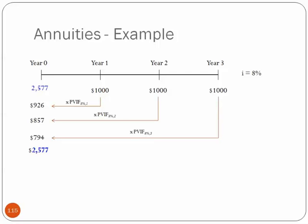That's $1,000 times, for the first term, the present value interest factor of 8% to the first. The second term is the present value interest factor of 8% to the second, and the third is to the third. It's just notation.